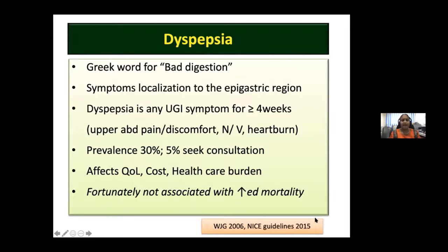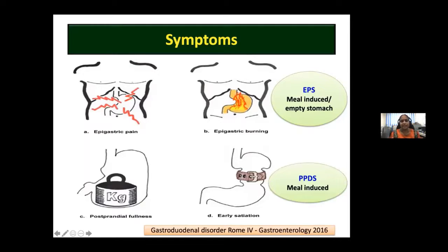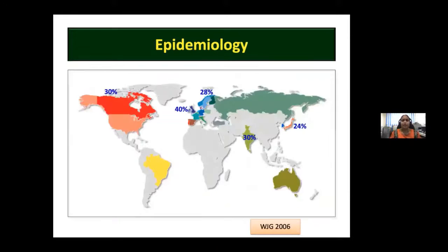Dyspepsia affects quality of life, is associated with significant cost to patients and the healthcare system, and adds to healthcare burden. Fortunately it is not associated with increased mortality. Cardinal symptoms include epigastric pain and epigastric burning — which may be meal-related or occur on an empty stomach — characterizing epigastric pain syndrome. Postprandial fullness and early satiety, usually meal-induced, characterize postprandial distress syndrome. Associated symptoms include bloating, belching, nausea, and vomiting. Significant vomiting should prompt looking for other causes such as gastric outlet obstruction or gastroparesis.